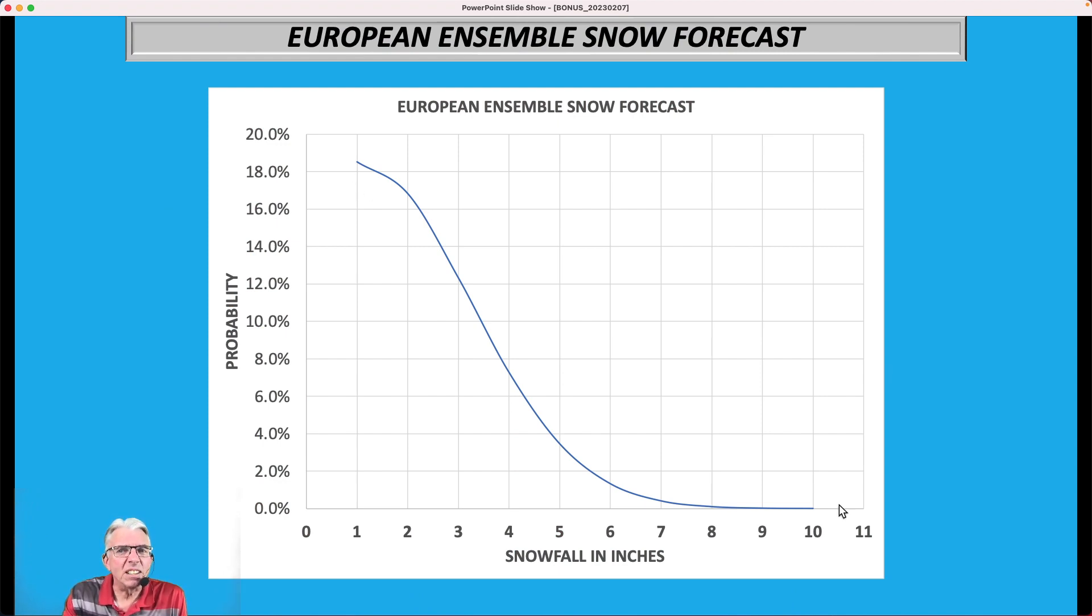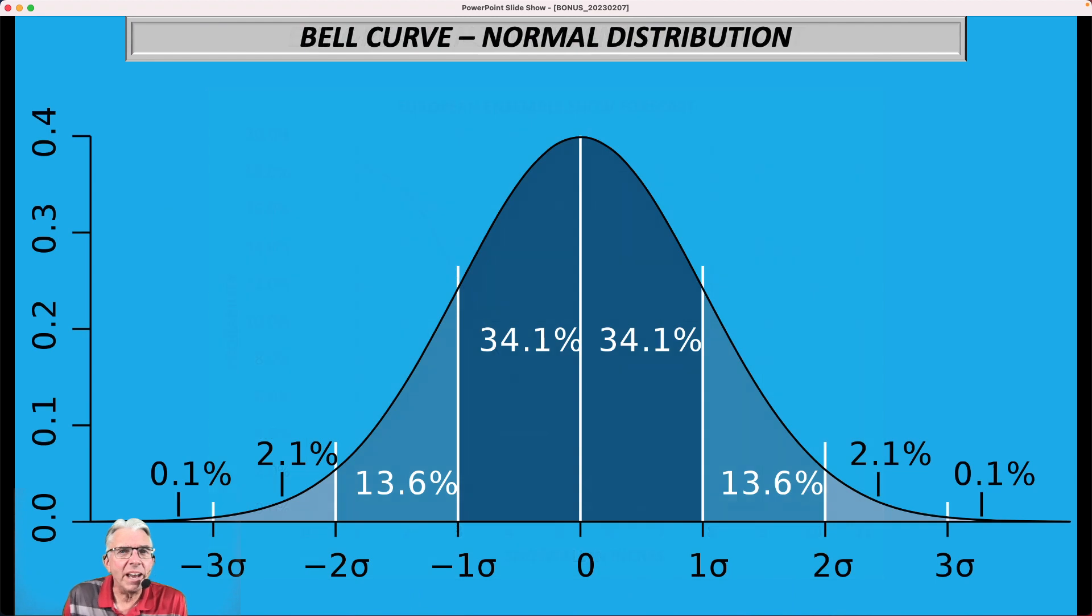But basically, the probability of getting that 10 inches is very close to 0, not 0 itself, but very close to it. And then you can see this is sort of like half of the bell curve. And so by the time you get to one inch, the probability was somewhere between 18 and 19 percent, not all that terribly high. And that's because so many of the members didn't have anything at all.